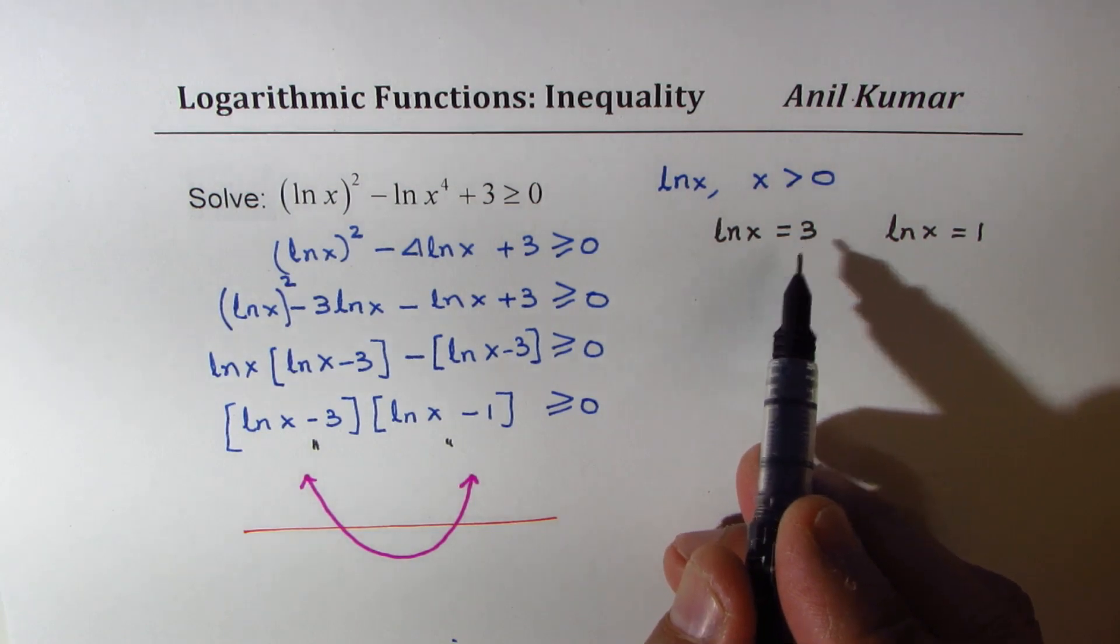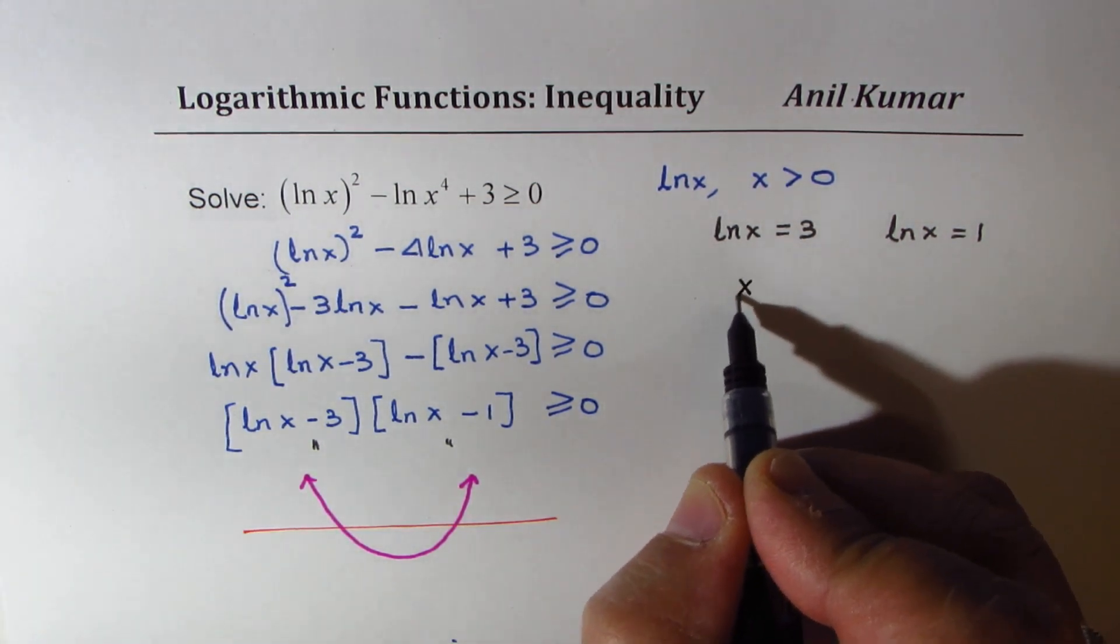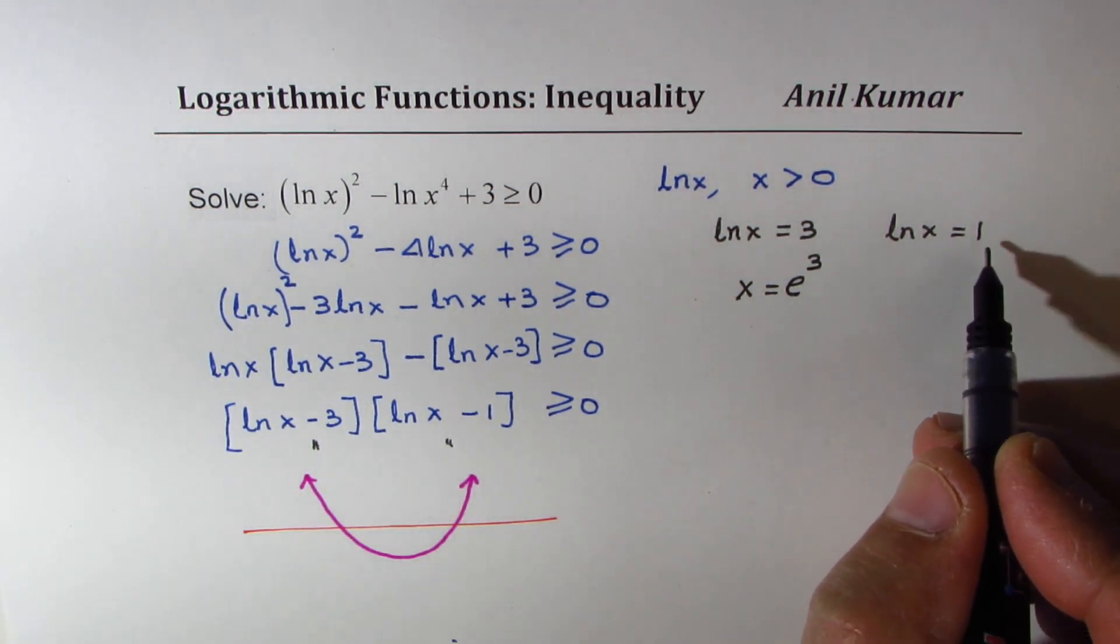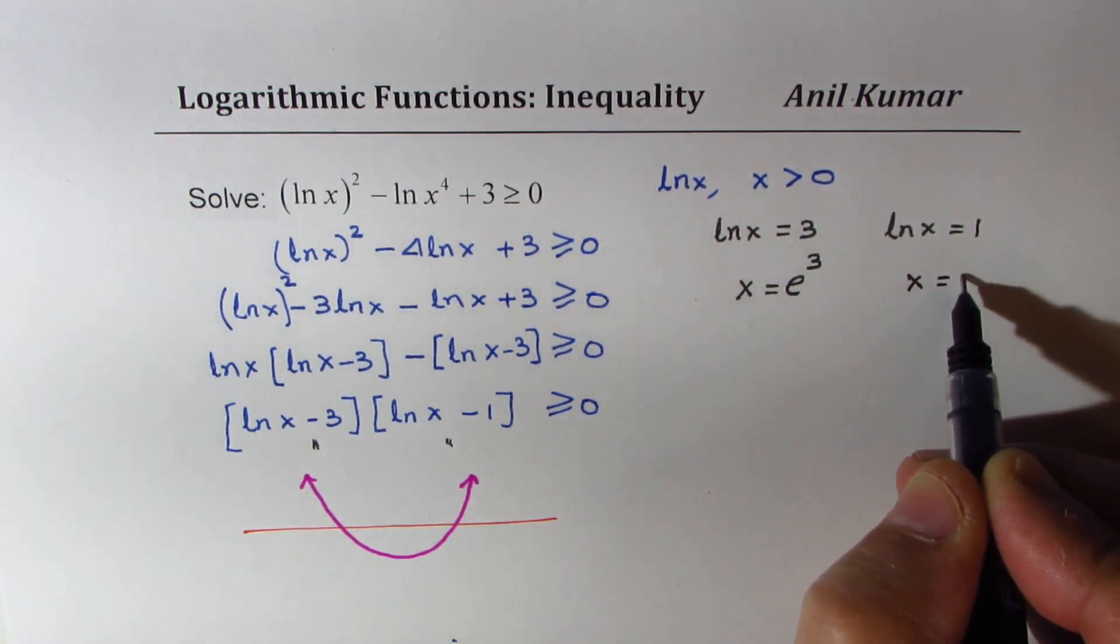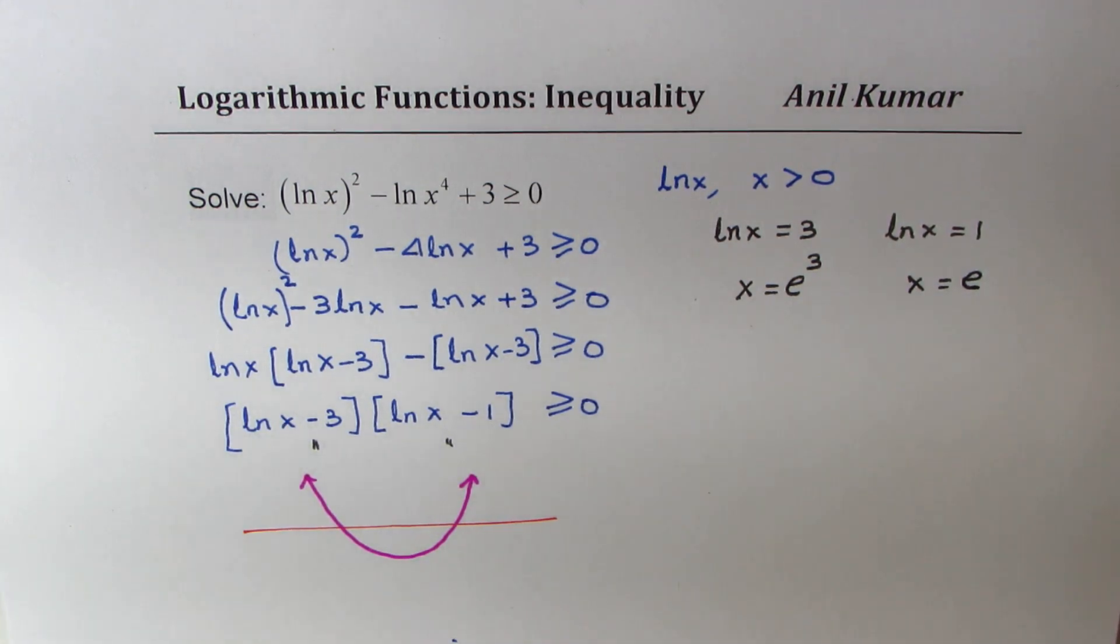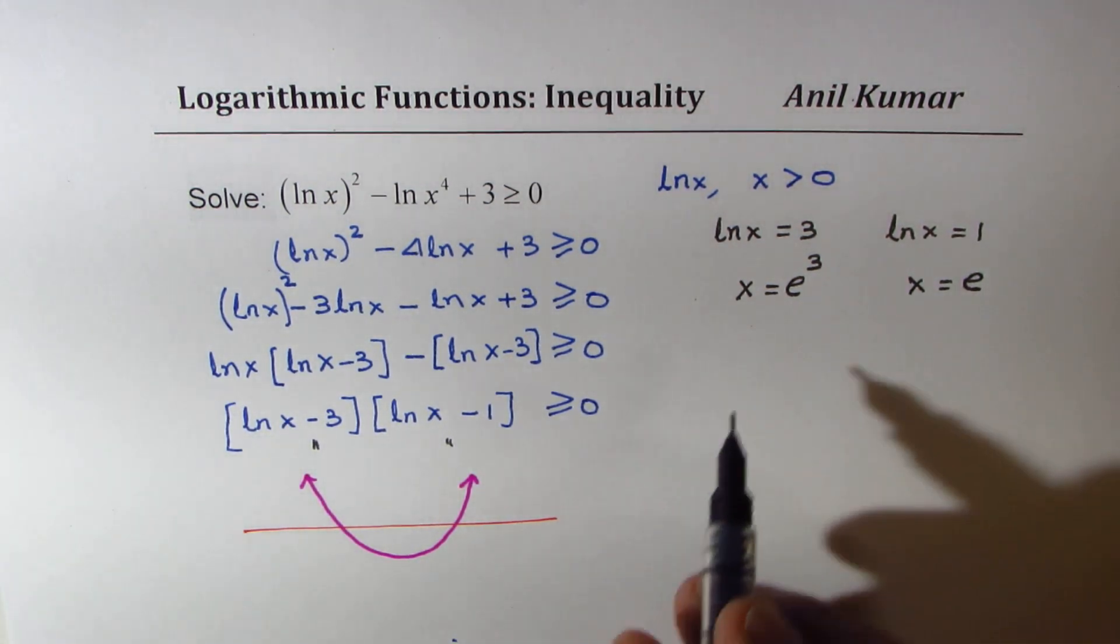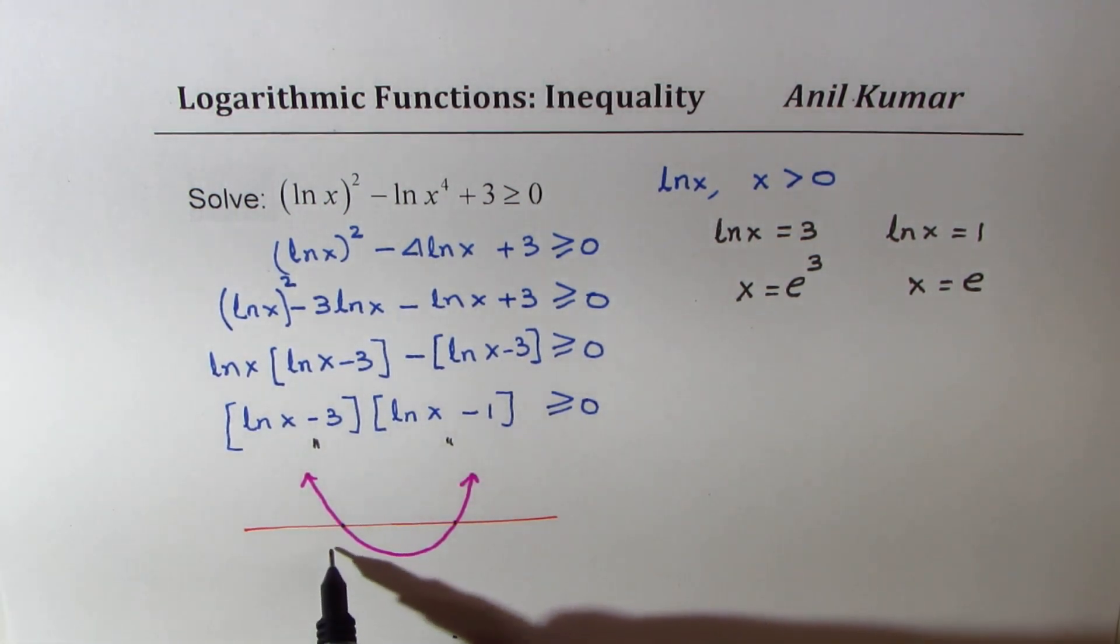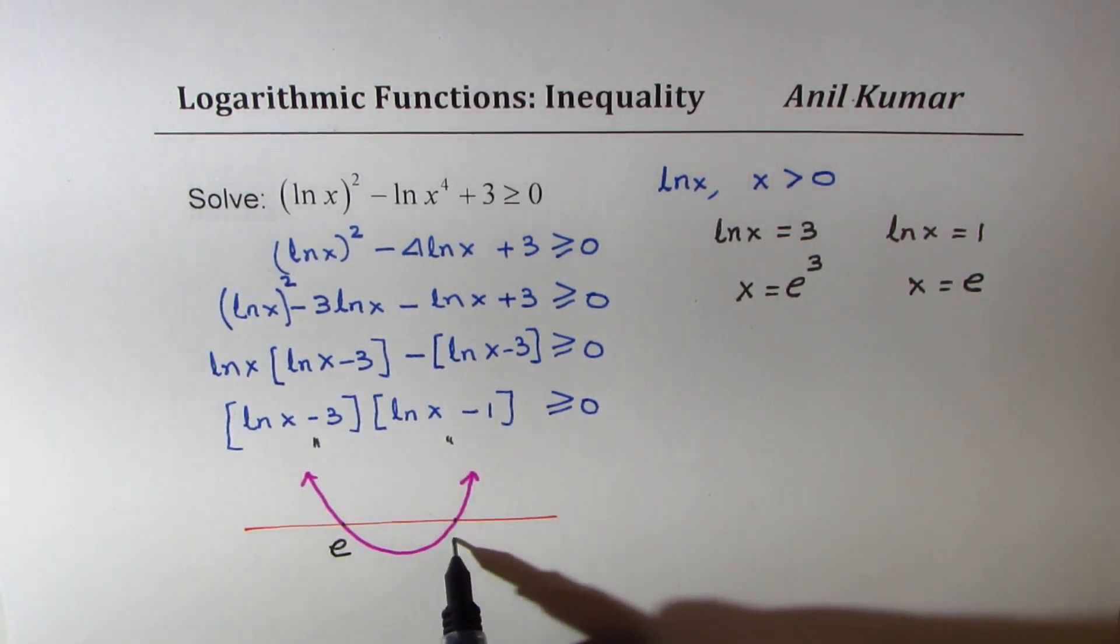If ln x is equal to 3 then x is equal to e to the power of 3. And if ln x equals to 1 then x is equal to e to the power of 1 which is e. So we have two zeros here which are at e and e cubed.